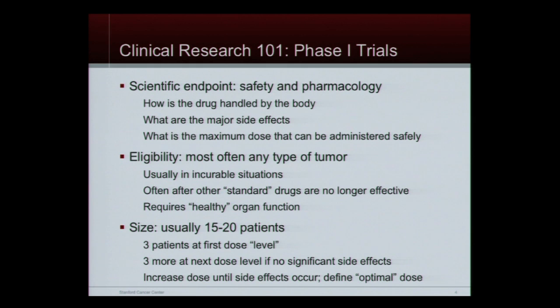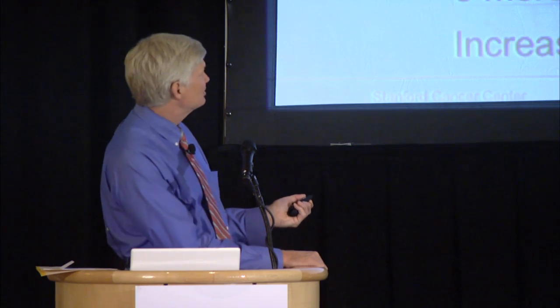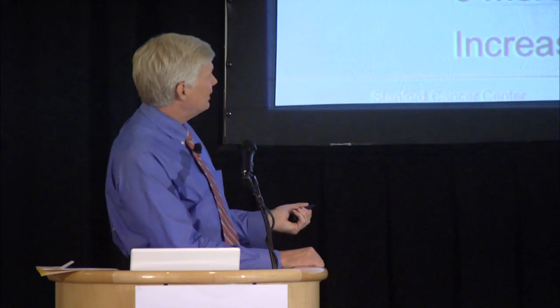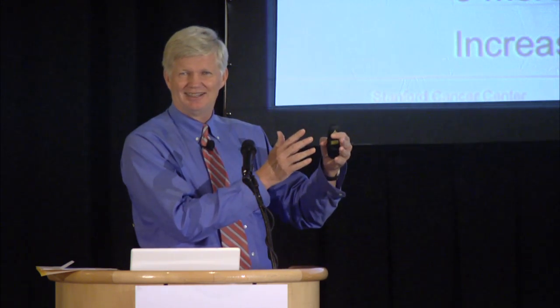A phase one study is typically for incurable situations, oftentimes after standard drugs have not worked, but not always. It usually requires pretty healthy people with cancer — pretty good liver function, good kidney function, up and around, walking, talking, eating. It's usually a small study, sometimes just 15 to 20 patients. We treat three patients at one dose we hope is safe. If it's unsafe, we go down to a lower dose; if it's safe, we go up a little bit, and we keep going up until we see toxicity. So we try to define an optimal dose of any new drug, and that's the purpose of a phase one study.